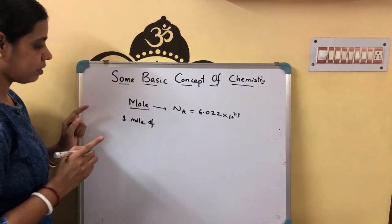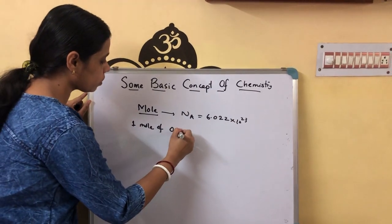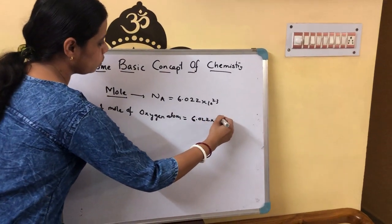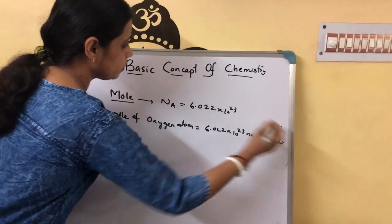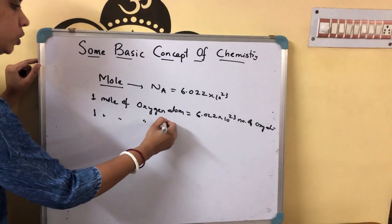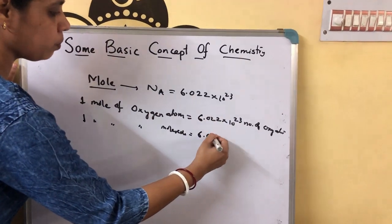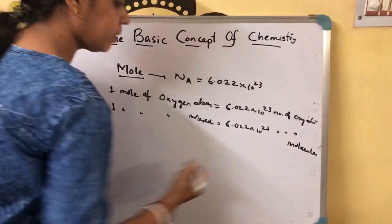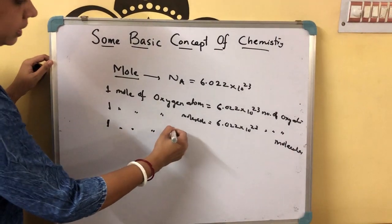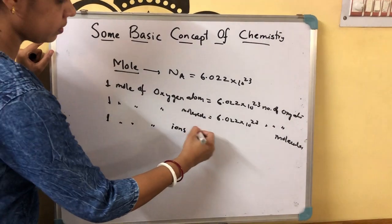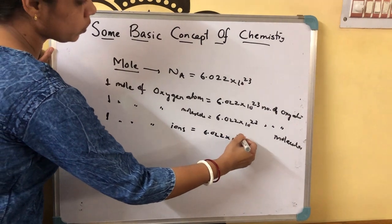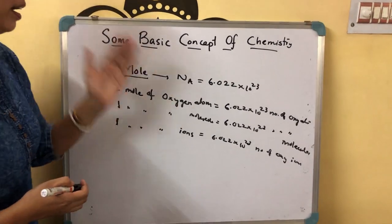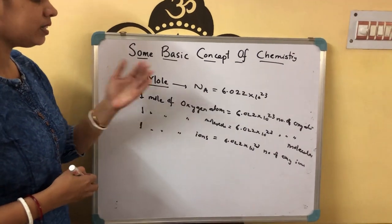Let me explain with examples. One mole of oxygen atoms means 6.022×10²³ number of oxygen atoms. One mole of oxygen molecules means 6.022×10²³ number of oxygen molecules. One mole of oxygen ions means 6.022×10²³ number of oxygen ions. Only the variety — atom, molecule, or ion — changes, but the number remains the same. This gives the relation between mole and numbers.